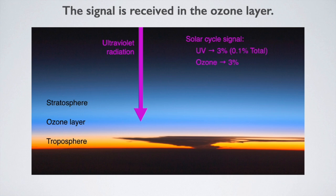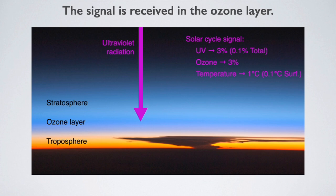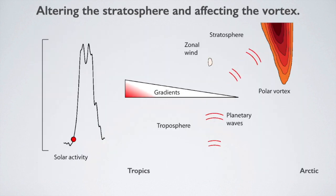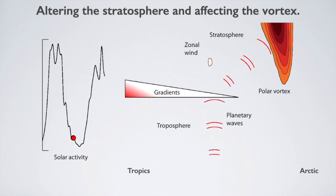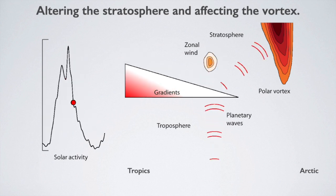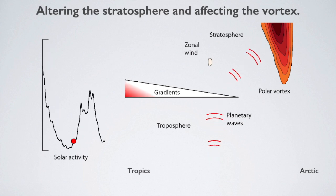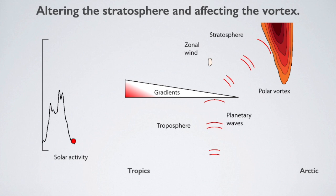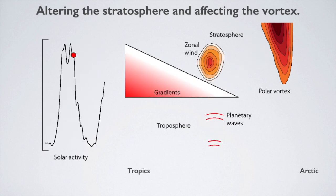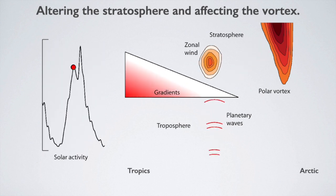How can solar activity cause changes in heat transport? The signal from the sun is received in the stratospheric ozone layer, which absorbs much of the ultraviolet radiation. This is a very sensitive receiver, because UV radiation changes 30 times more than total radiation — about 3%. But in addition, the increase in UV radiation creates more ozone, which also increases by 3%. With more ozone and more UV radiation, the ozone layer experiences a temperature increase of 1 degree Celsius with solar activity, which is much more than at the surface. The ozone response to changes in solar activity modifies the temperature and pressure gradients, and this causes the speed of the zonal winds in the stratosphere to change. When activity is high, the gradients become larger and the wind speed increases; when activity is low, the gradients become smaller and the wind speed decreases.